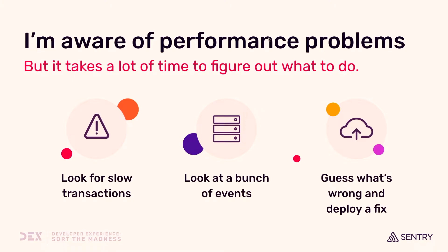You go into Sentry, you look for slow transactions, then you're digging around each individual event to figure out what's going on. You form a hypothesis as to what spans are slow, what might be causing them to be slow, and then deploy a fix and cross your fingers that that's actually what you need to do.